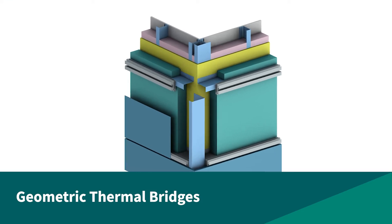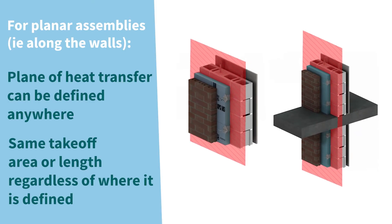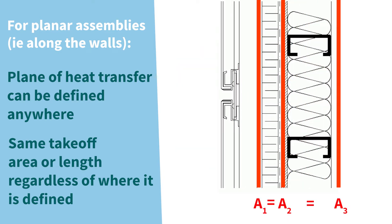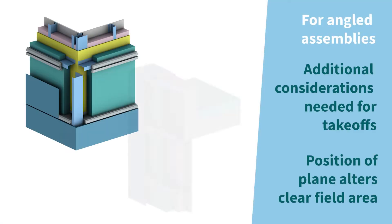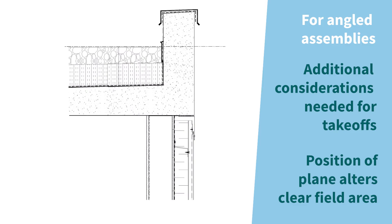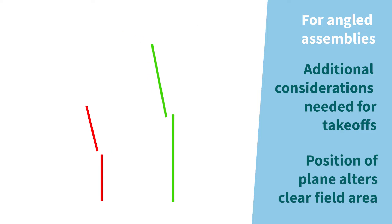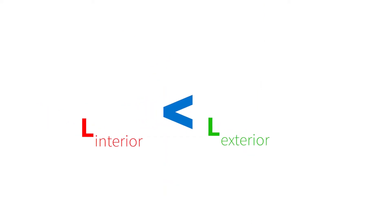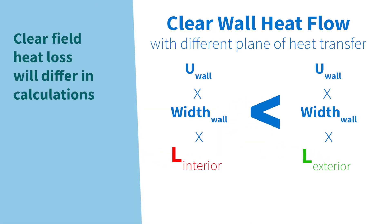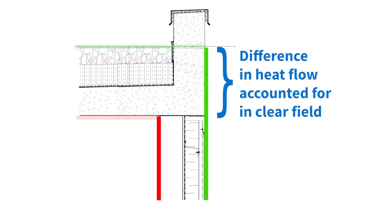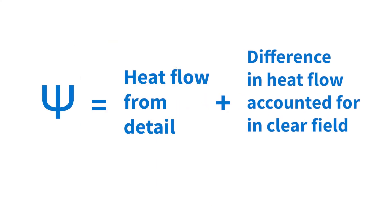Geometric Thermal Bridges. For most assemblies and details that are along a straight section of the building, the plane of heat transfer is the same no matter where it's defined within the assembly. However, when assemblies meet at an angle, such as at a building corner or roof-to-wall interface, the interior plane along the drywall and the exterior plane along the cladding will differ. When that happens, the heat loss accounted for through the clear-filled assembly can be over or underestimated depending on the detail and which dimension is used. In these cases, the linear transmittance for angled details can be used as a correction factor.